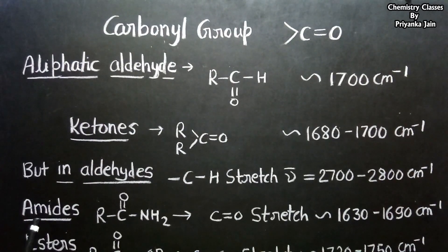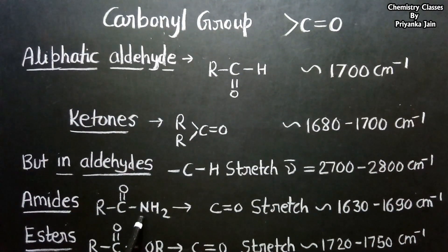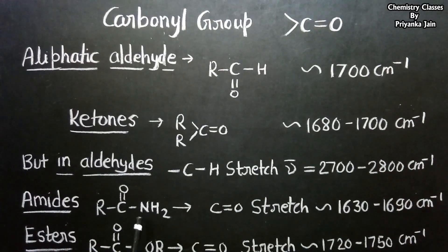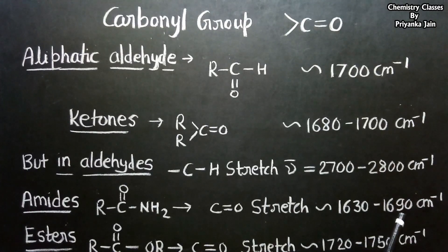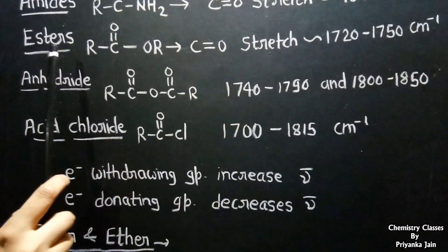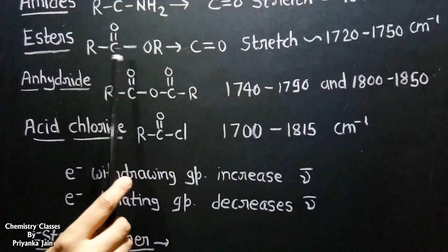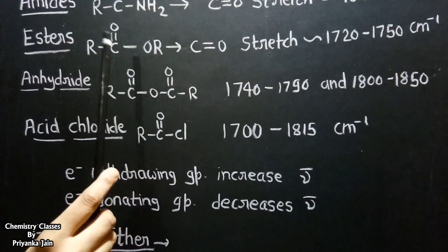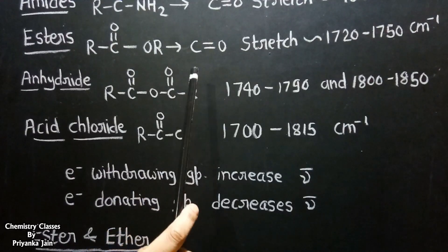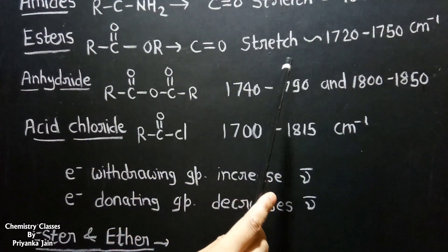In amides, an amino group is present, and nitrogen is an electron-donating group, so the C=O stretching frequency is somewhat decreased, appearing near 1,630 to 1,690 cm⁻¹. In esters (RCOOR), the OR group is electron-withdrawing, so it increases the C=O stretching frequency to somewhat above 1,700, specifically 1,720 to 1,750 cm⁻¹. In anhydrides, there are two carbonyl groups, so we get two peaks: one at 1,740 to 1,790 cm⁻¹ and another at 1,800 to 1,850 cm⁻¹.